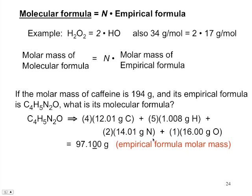So the first thing we need here is the empirical formula molar mass, which we can calculate in the usual fashion. And so now if we take our molar mass, 194 grams, and divide by the molar mass of our empirical formula, we get the integer 2.